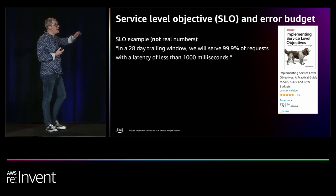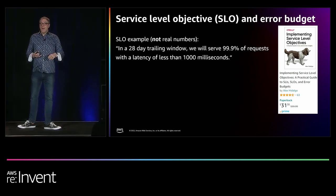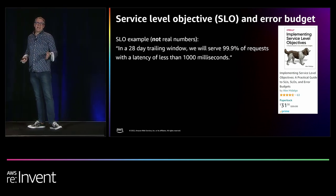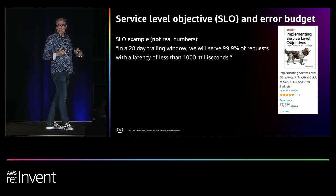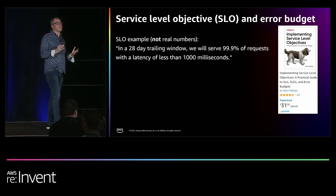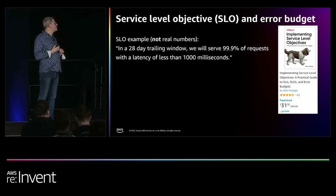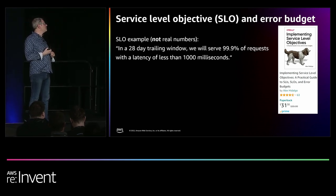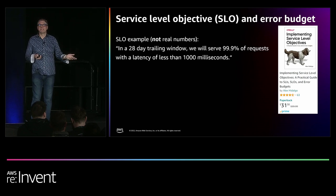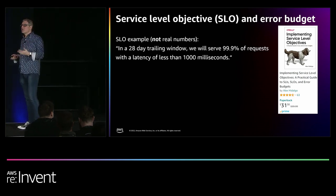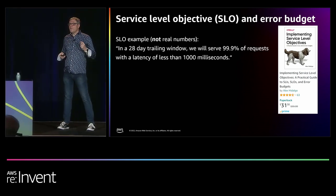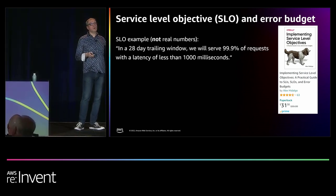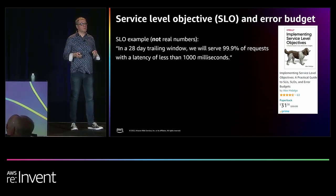Service-level objectives — I told you this would come up again. This is an example format, not one they actually use, but they did want to share the format. In a 28-day trailing window, we'll see 99.9% of requests with a latency of less than one second. That's an example of a service-level objective that might be used by the search team.